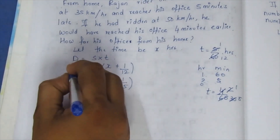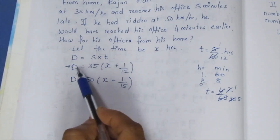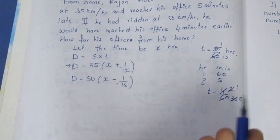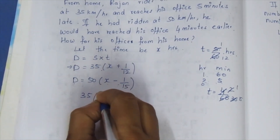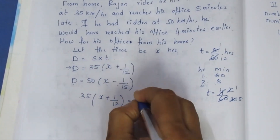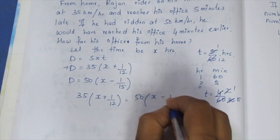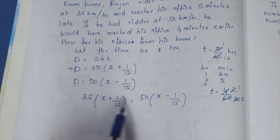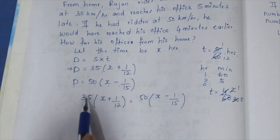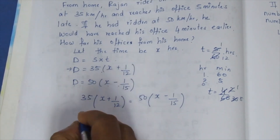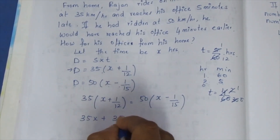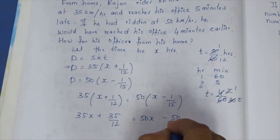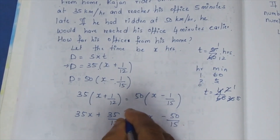Since the distance is the same in both cases, we set them equal: 35 into (x plus 1/12) equals 50 into (x minus 1/15). Expanding: 35x plus 35 by 12 equals 50x minus 50 by 15.